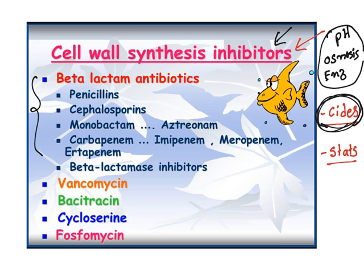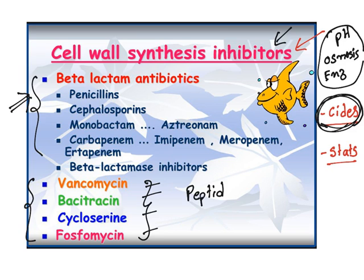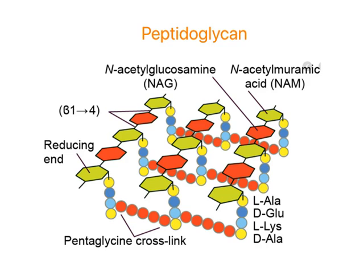In cell wall inhibitors you have beta-lactams and non-beta-lactams. In the next video we will see about beta-lactams, but in this video we are going to see the non-beta-lactams: vancomycin, bacitracin, cycloserine, and fosfomycin. To understand their mechanisms of action, we need to understand the cell wall structure, which is made of peptidoglycan — also known as murein.